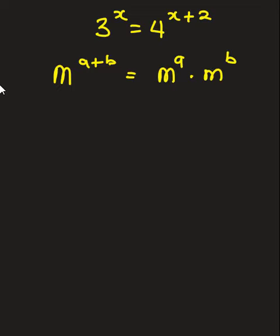So from here, we are going to have 3 raised to the power x is equal to 4 raised to the power x times 4 raised to the power 2.